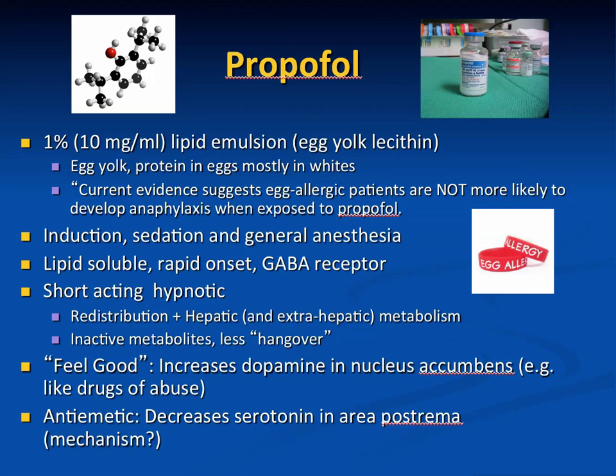Emergence delirium is a complication of ketamine, especially at higher doses — patients report vivid hallucinations upon awakening. It can be reduced by small doses of benzodiazepines like midazolam. Ketamine's sympathomimetic and cholinergic effects increase airway secretions, which can be managed with glycopyrrolate. Atropine is a poor choice because it crosses the blood-brain barrier and can worsen emergence delirium. Glycopyrrolate reduces secretions and midazolam reduces emergence delirium.